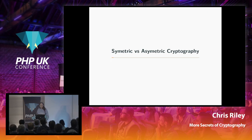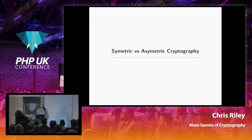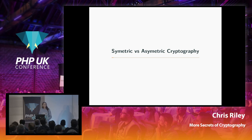To summarize the difference: symmetric algorithms use a single key for both encrypting and decrypting and are generally much faster. Asymmetric algorithms use two keys and are more computationally complex. In practice, we use both in combination: generate a random symmetric key, encrypt your large data with it, and then encrypt just that small key using the slower asymmetric algorithm.